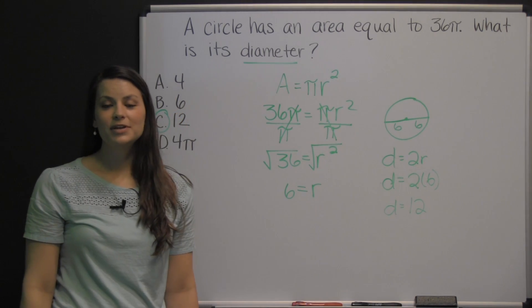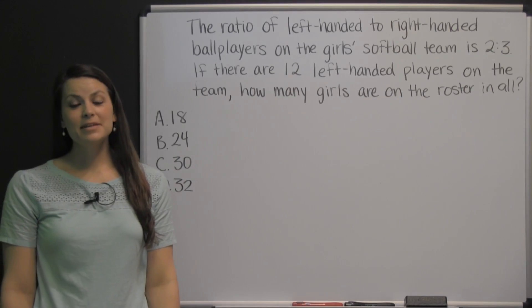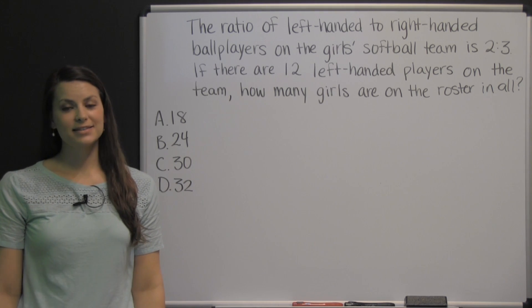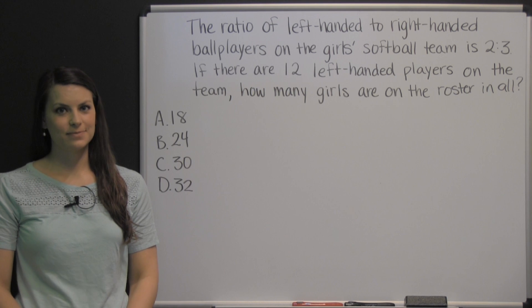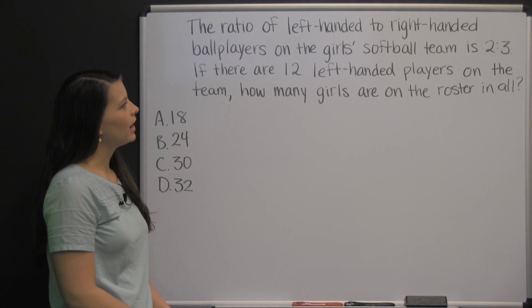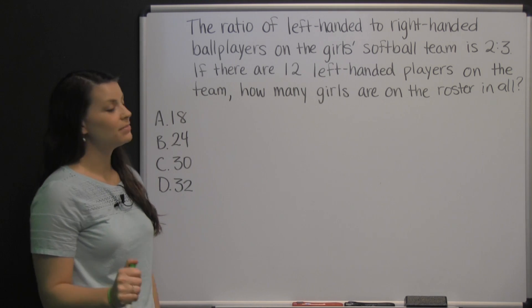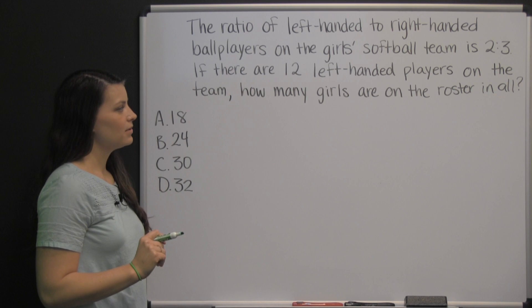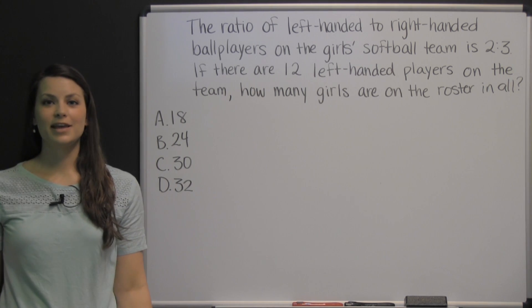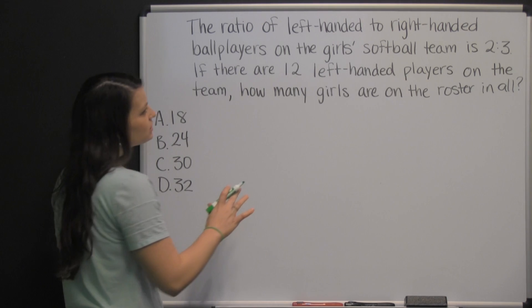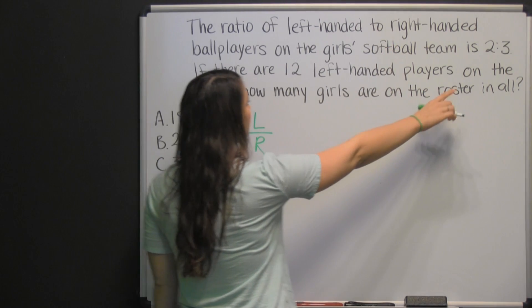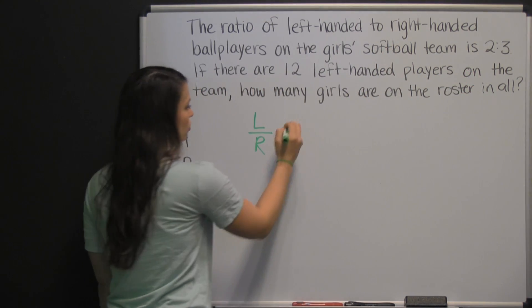So there's the type of problem you'll encounter when taking the TABE test. Good luck! The TABE exam has two math sections. This is a question from the applied mathematics section of a TABE practice test. The ratio of left-handed to right-handed ball players on the girls' softball team is two to three. If there are twelve left-handed players on the team, how many girls are on the roster in all?